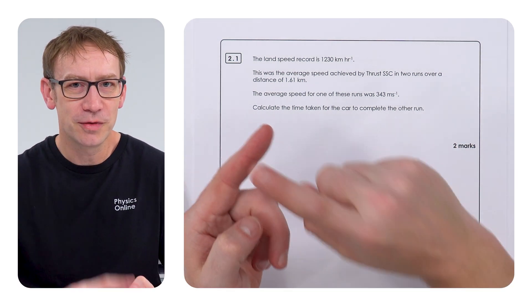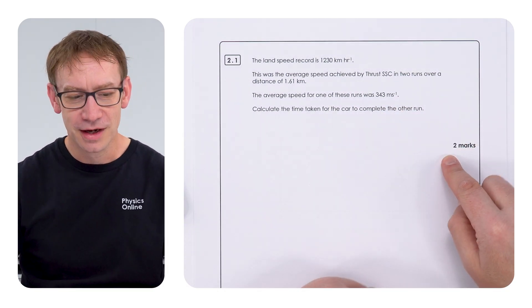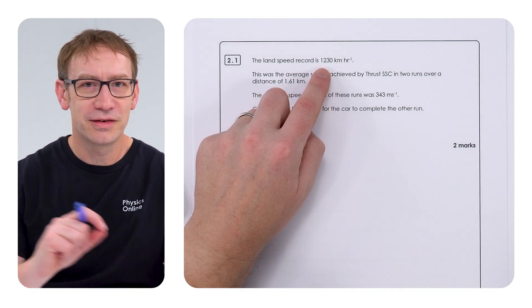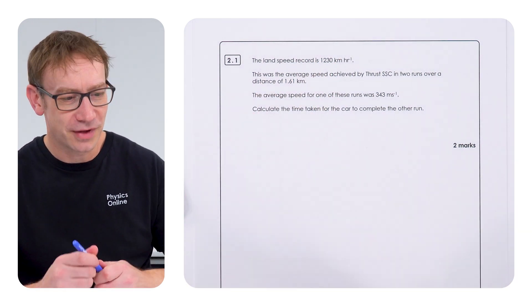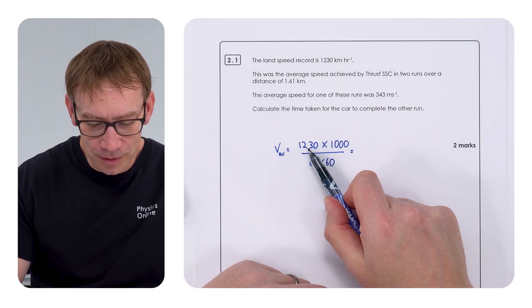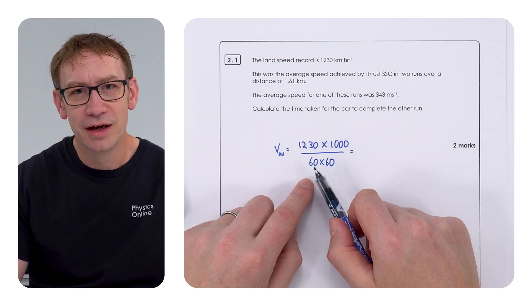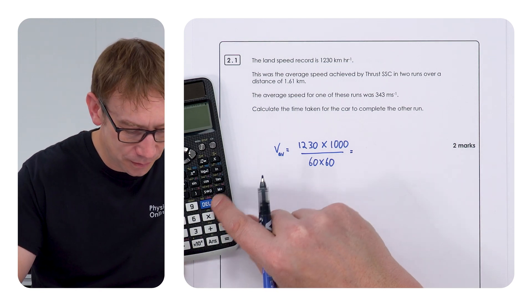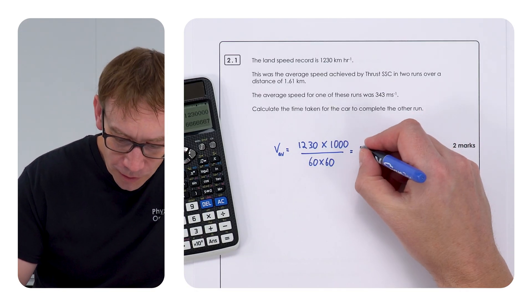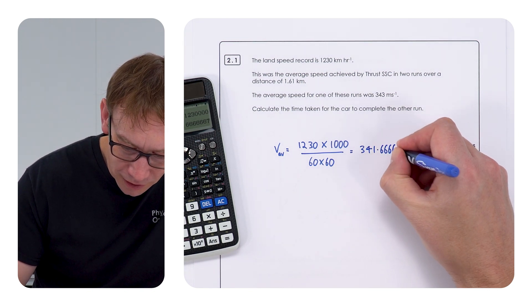So this first question, pretty much most people got one mark but only about 50% of the students actually got two marks for this. So the first thing I want to do is convert this speed here into our standard SI units of metres per second. And I'm going to simply do that by looking at our kilometres per hour and I'm going to convert this to metres by multiplying by 1,000 and then dividing by the number of seconds in an hour, so 60 times 60. Which is equal to 341.66667.